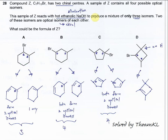Compound Z, C7H13Br, has two chiral centers. It undergoes reaction with hot ethanolic NaOH, so compound Z will undergo elimination to remove the HBr. It produces three isomers — this is the key point. So for options A, B, C, D, we need to find which one can form exactly three isomers.